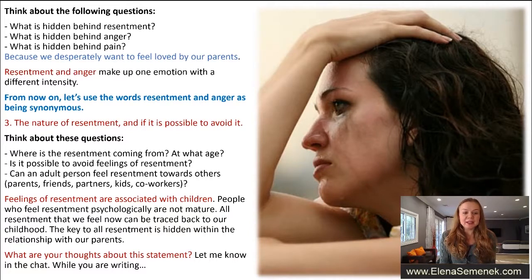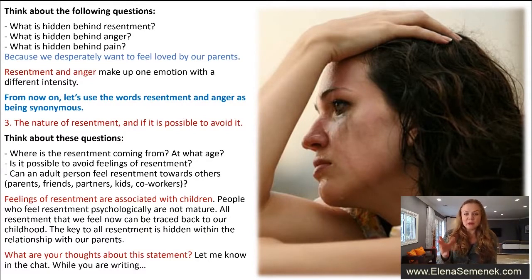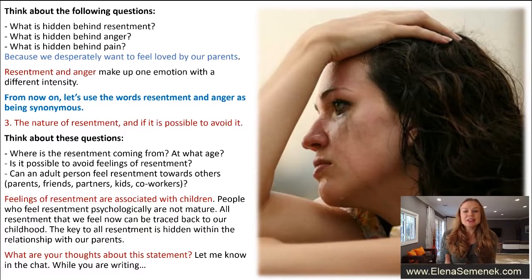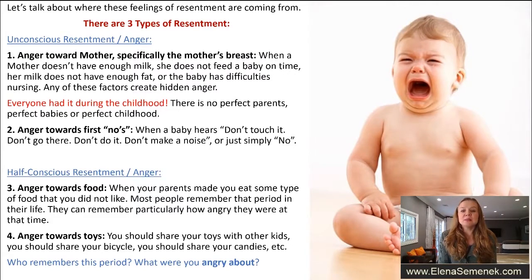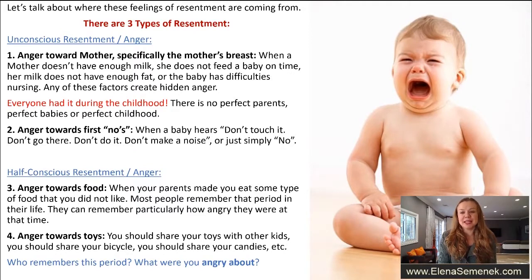Our resentment that we feel now can be traced back to our childhood. The key to all resentment is hidden within the relationship with our parents. There are three types of resentment: unconscious resentment, half-conscious resentment, and conscious resentment. Is it possible to avoid feelings of resentment? The answer is no, because we have unconscious and half-conscious resentment that we cannot avoid.